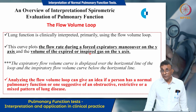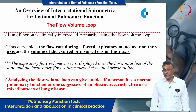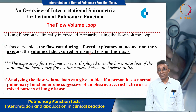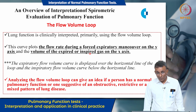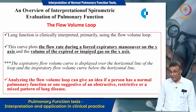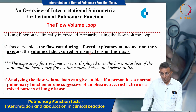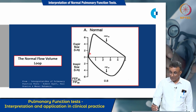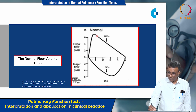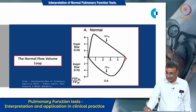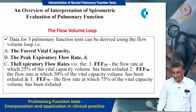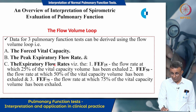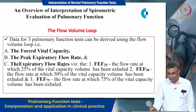Lung function is clinically interpreted using the flow volume loop, which can indicate normal pulmonary function or patterns suggestive of obstructive, restrictive, or mixed disease. The flow volume loop is a curve in which airflow is plotted on the y-axis and volume of expired or inspired air on the x-axis. Data derived include the forced vital capacity, the peak expiratory flow rate, and expiratory flow rates — FEF 25, FEF 50, and FEF 75.